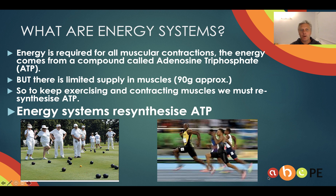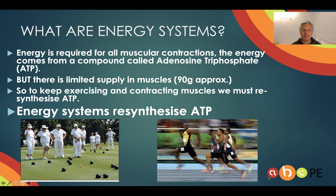Firstly, what are they? You need to know that all muscular contractions are powered — the energy comes from a compound called adenosine triphosphate. Unfortunately, we only have a very limited supply stored in the muscle, around one to two seconds of activity. And then we either stop or we have to produce ATP. The thing that produces ATP in our body are our energy systems.